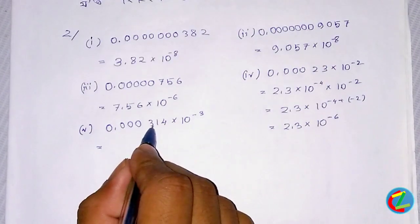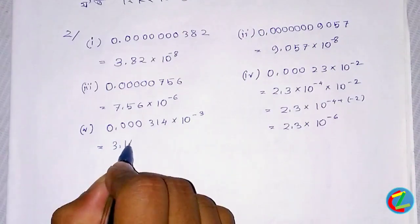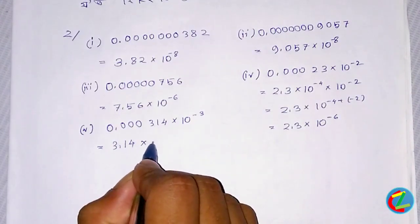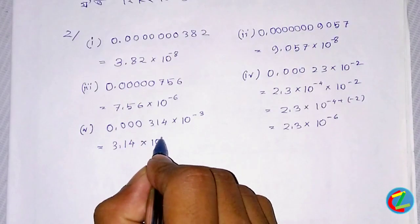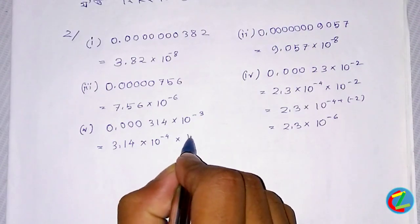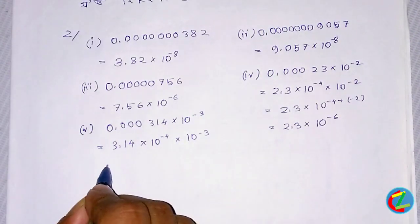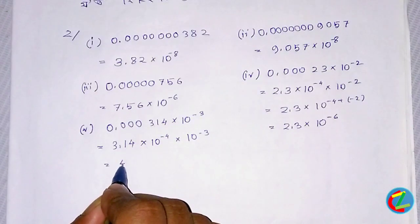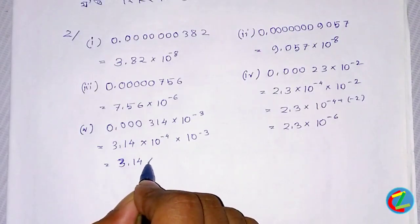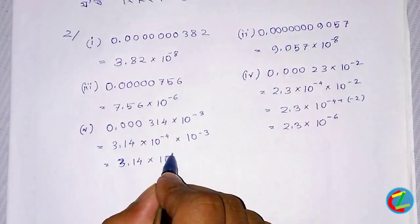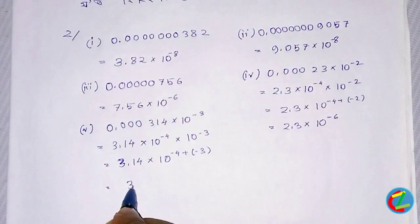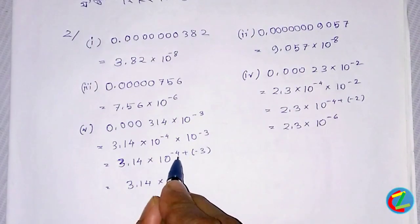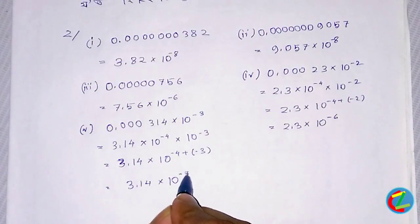Therefore, 10 to the power of minus 3D. Let us go on to the next video. Now we have 3.14 x 10 x 20 x 10. 3.14 into 10^22 prime minus 70 plus minus 3.